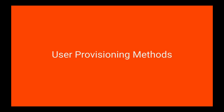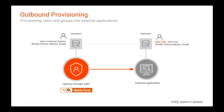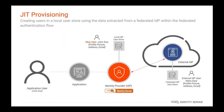Now we will learn about standard user provisioning methods. Creating and managing user identities in the internal system using an external user store is called inbound user provisioning. Provisioning users to the internal system at the time of federated authentication is called just-in-time provisioning, which is popularly known as JIT provisioning.